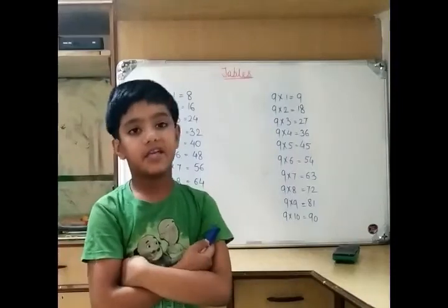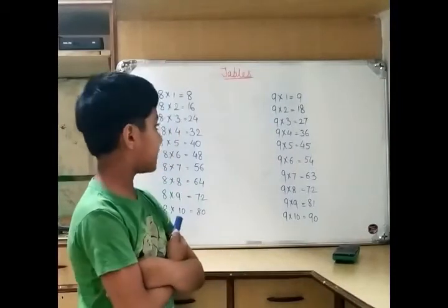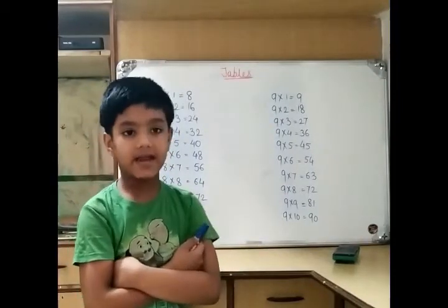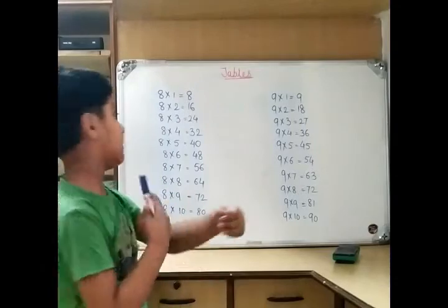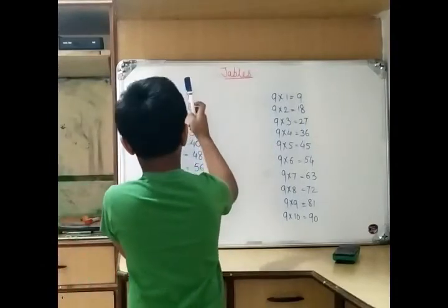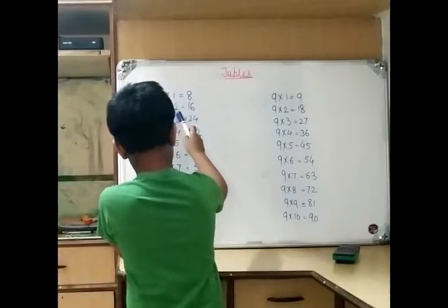Now we see multiplication table 8 and 9. 8 ones are 8, 2 8s are 16.